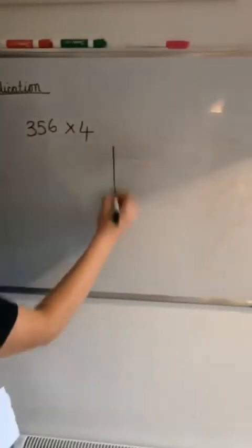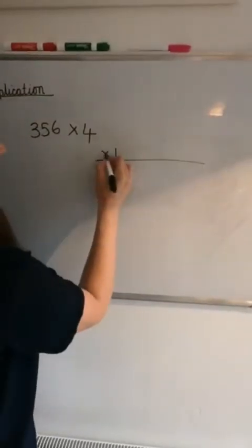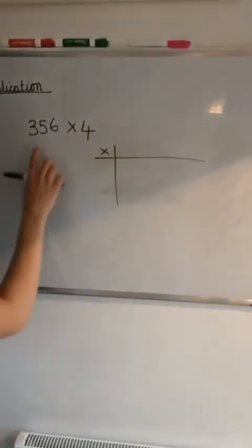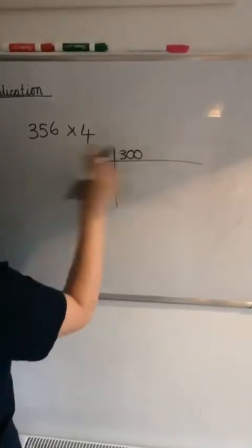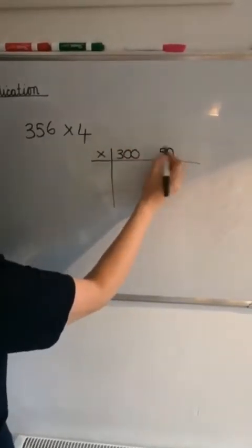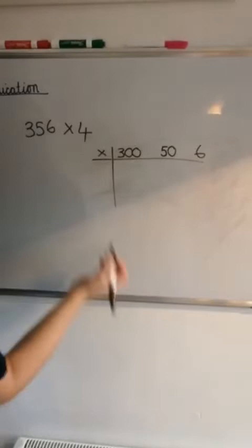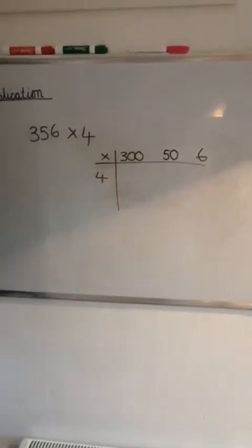Hopefully you've had a go. So we'll put our multiplication symbol up there first. We should have 356 and then the 4 on its own over there.